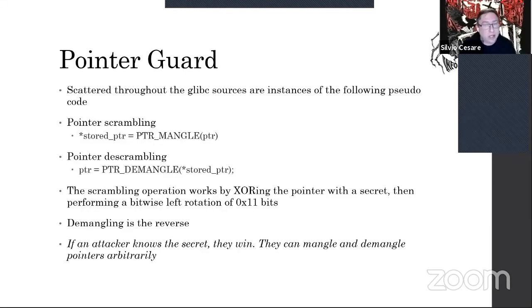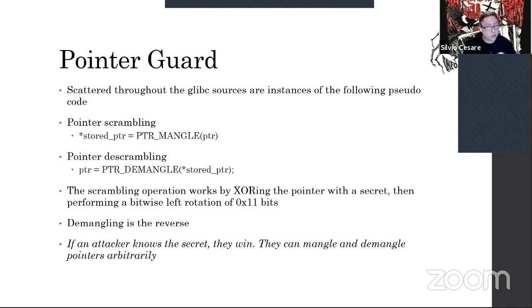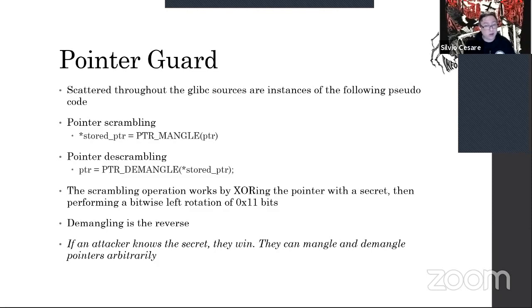Looking at the glibc source, you'll find references to pointer_mangle and pointer_demangle. The scrambling operation XORs the pointer with the secret stored in thread-local storage, then performs a bitwise left rotation of 0x11 bits. Demangling is the reverse. The crux of this mitigation is: if the attacker knows the secret used in the scrambling operation, the attacker wins — they can mangle and demangle arbitrary pointers at will, given an arbitrary write primitive.